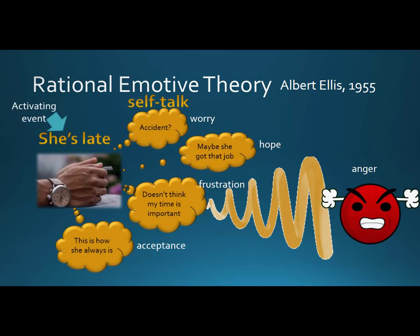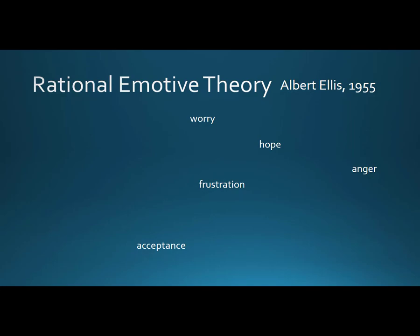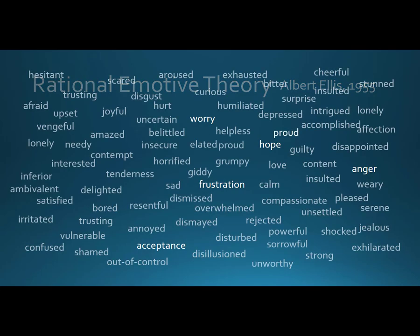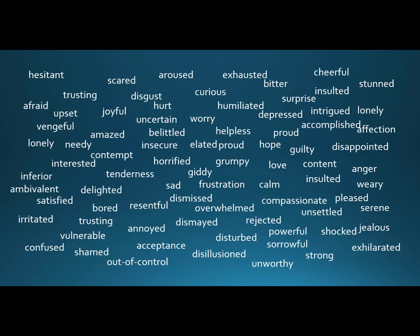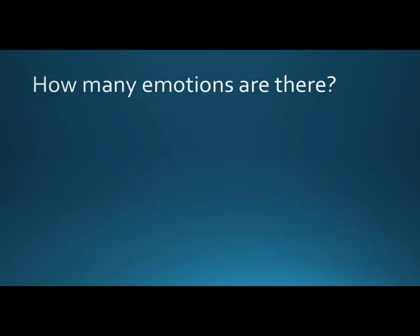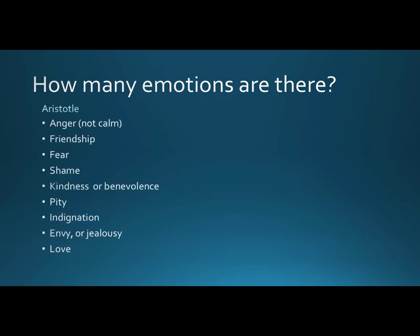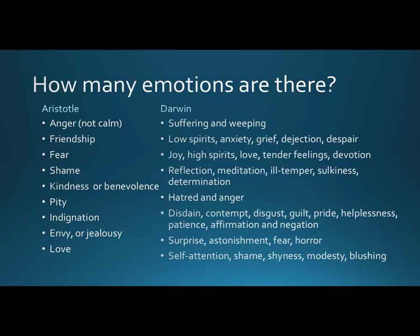Notice that for our example I identified five different emotions, but there are many, many more—way too many to list here. How many emotions are there? It depends on who you ask. Aristotle identified nine—anger, friendship, fear, shame, kindness, pity, indignation, envy, and love. And Darwin added some more.